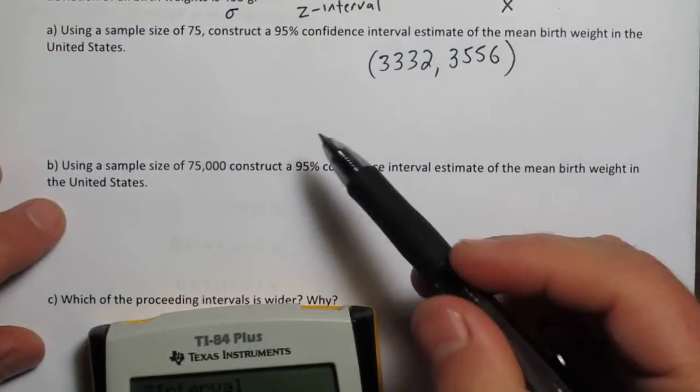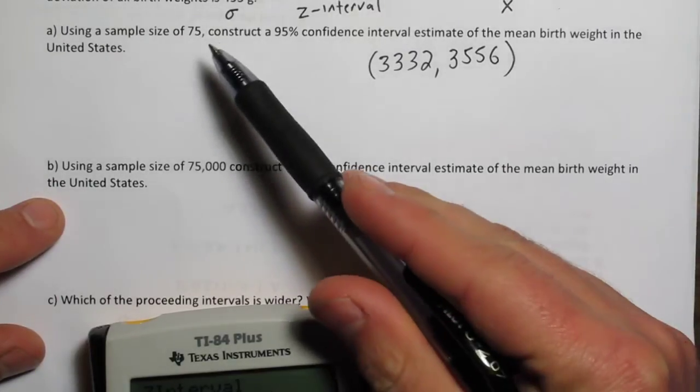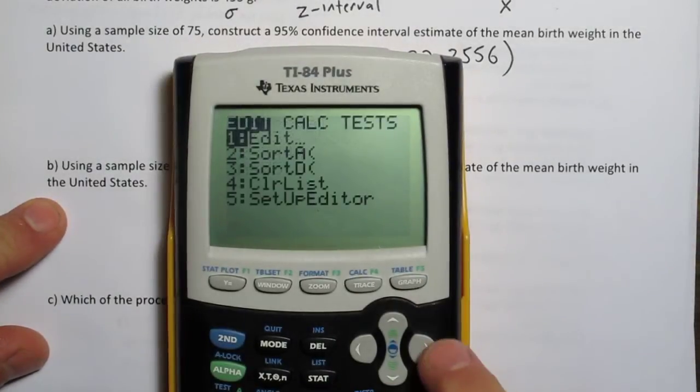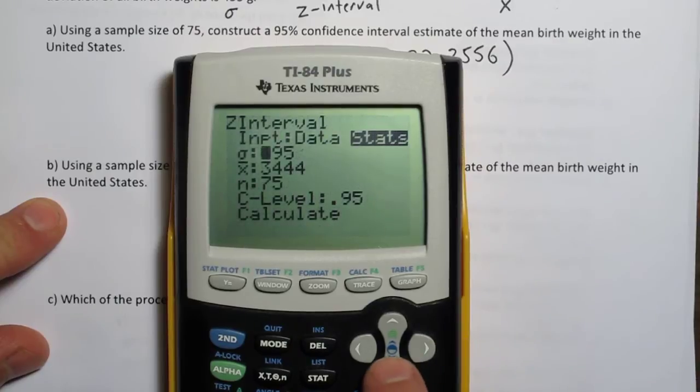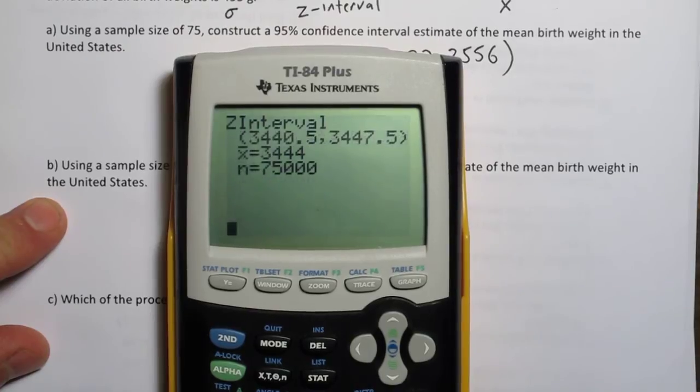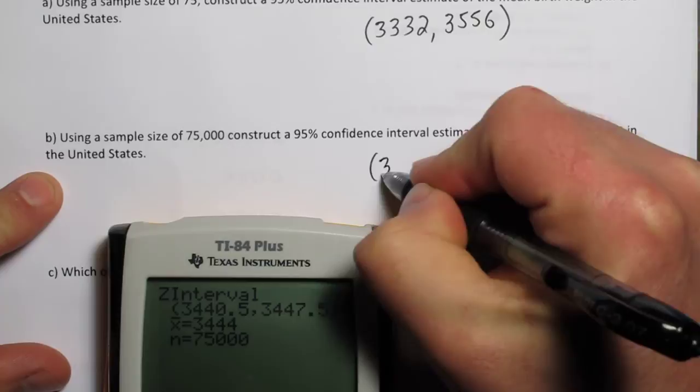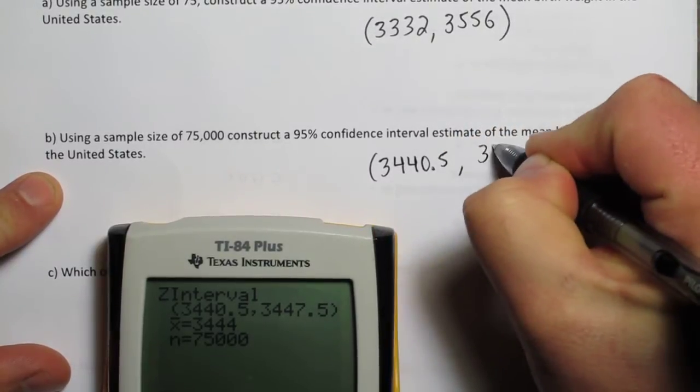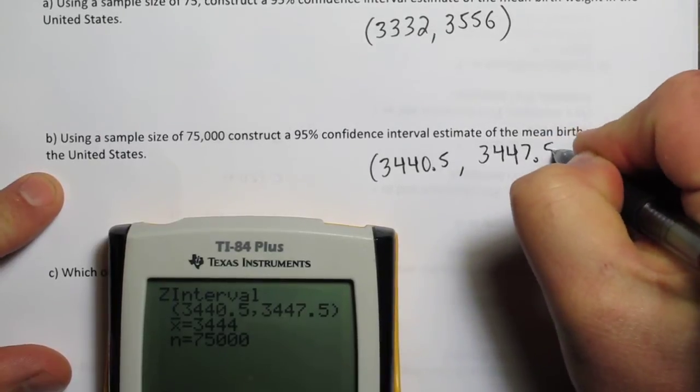Now in part B of the problem here, it says what if your sample size was 75,000? So 1,000 times greater than our original sample. So I'm going to go back to my z interval menu and change the sample size from 75 to 75,000. And I get this new interval. 3440.5 to 3447.5.